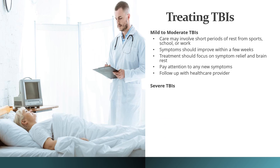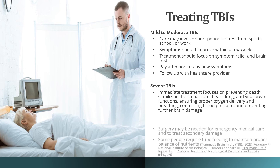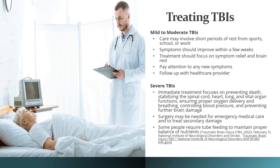For severe TBIs, immediate treatment focuses on preventing death, stabilizing the spinal cord, heart, lung, and vital organ functions, ensuring proper oxygen delivery and breathing, controlling blood pressure, and preventing further brain damage. Surgery may be needed for emergency medical care and to treat secondary damage. Some people require tube feeding to maintain proper balance of nutrients.